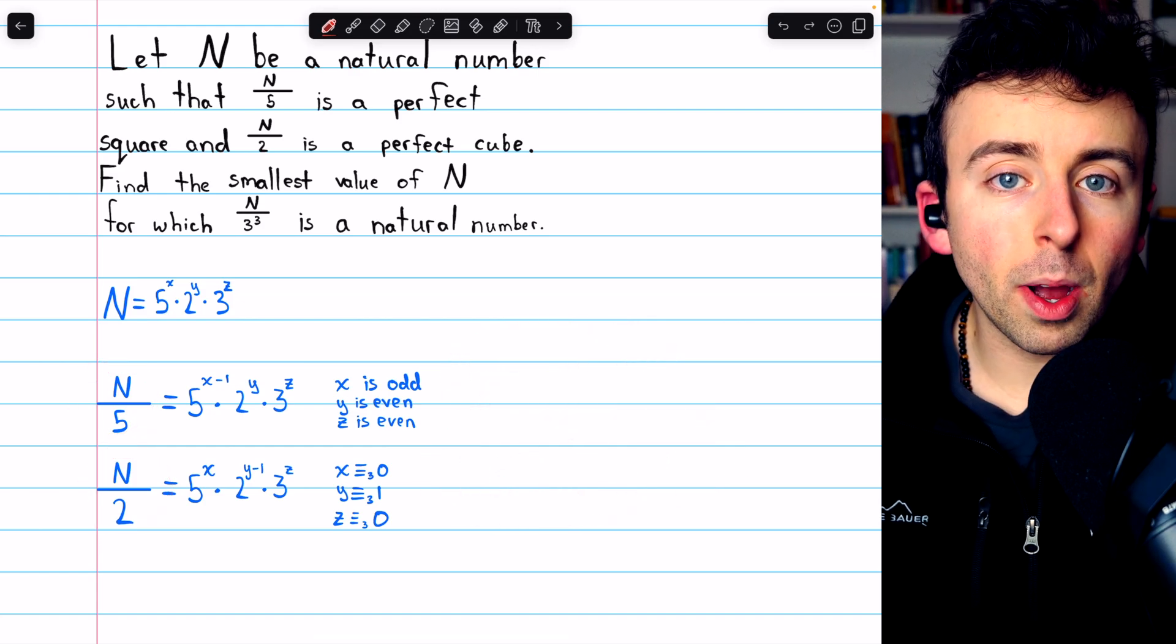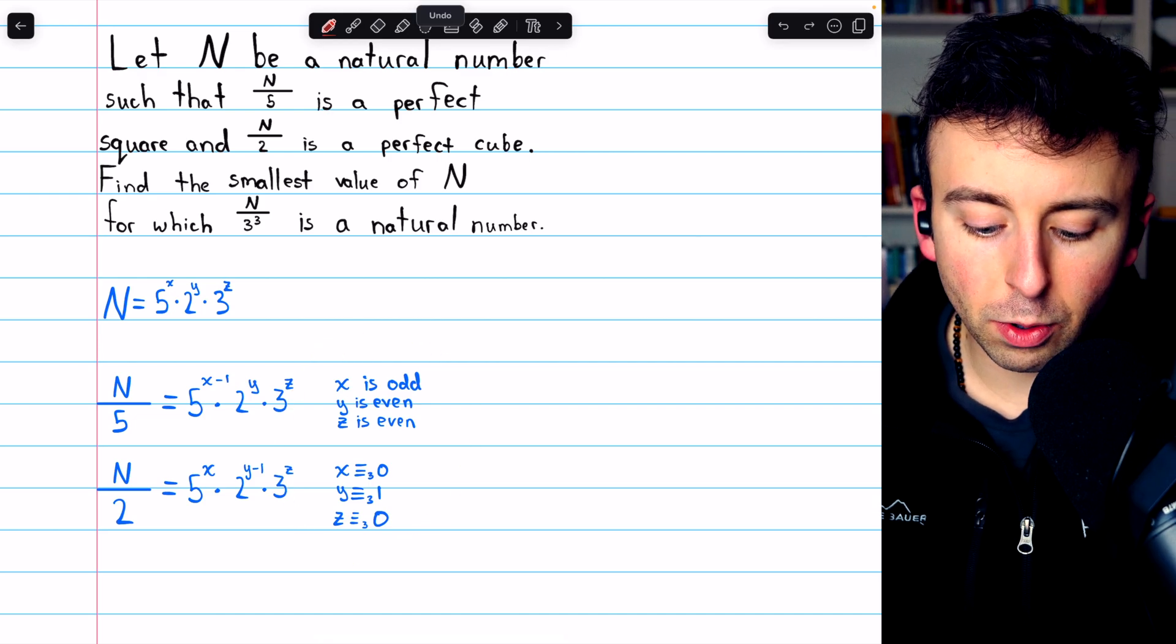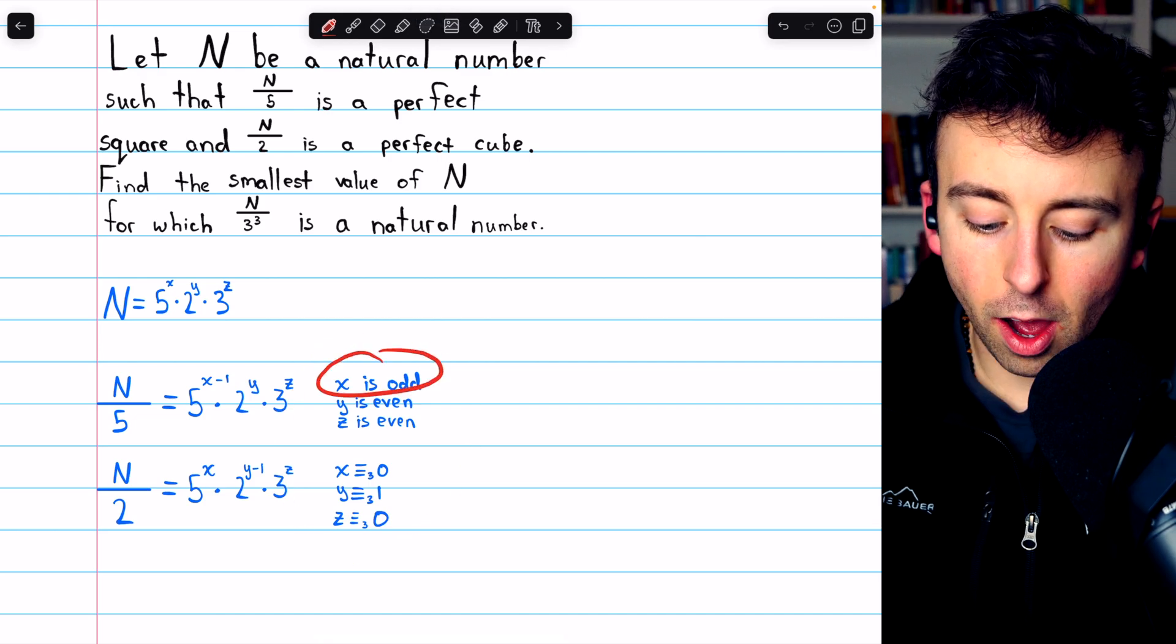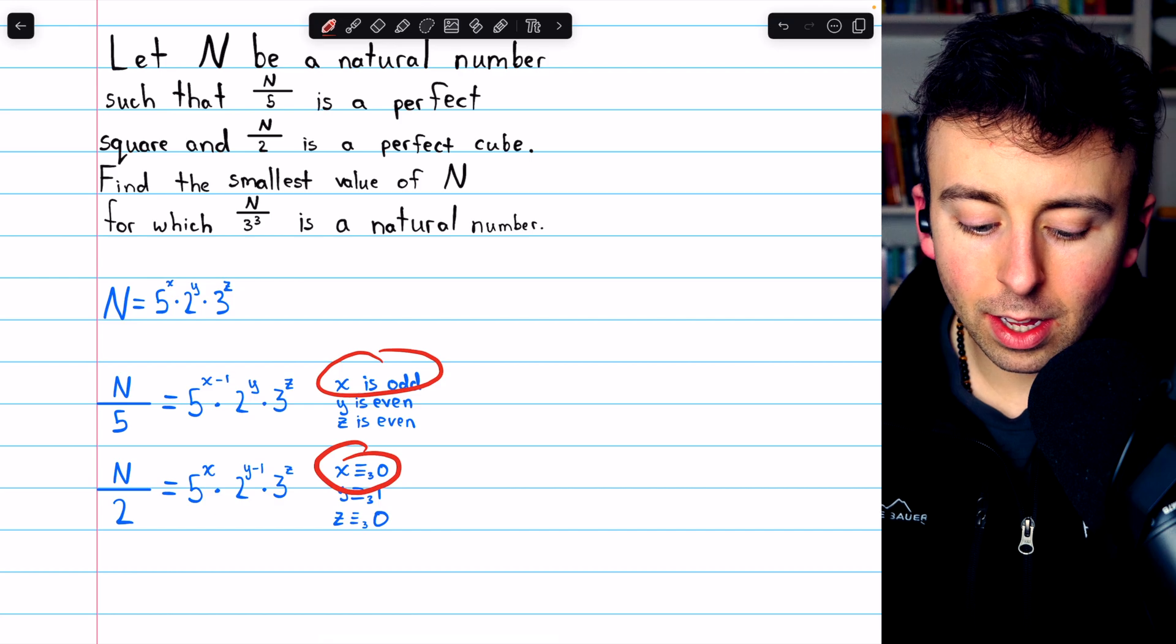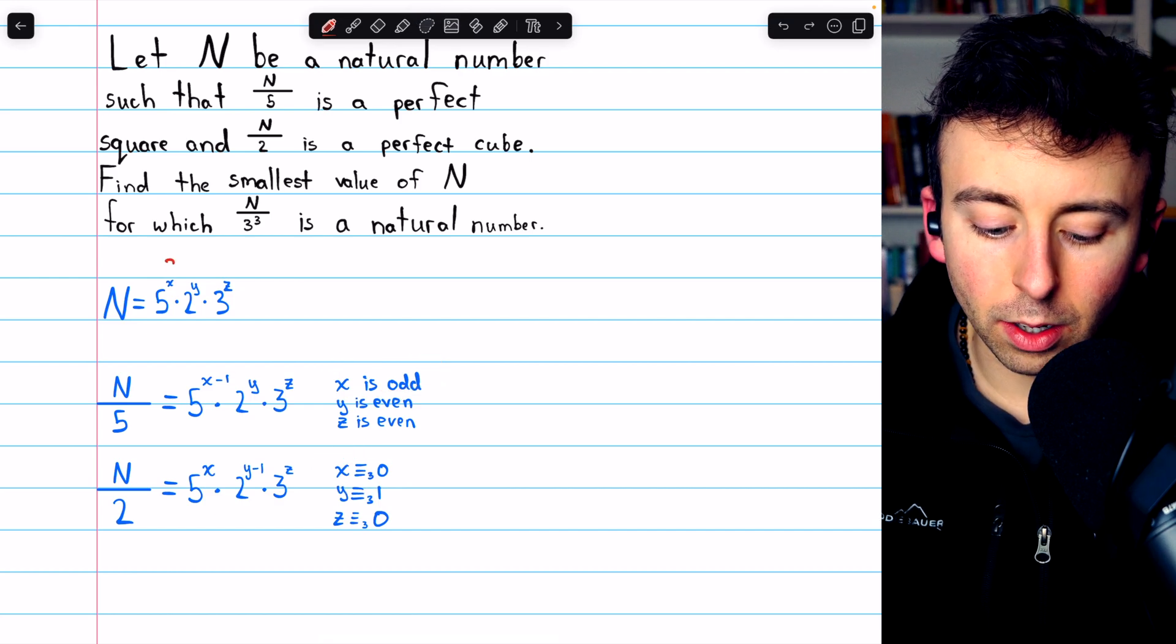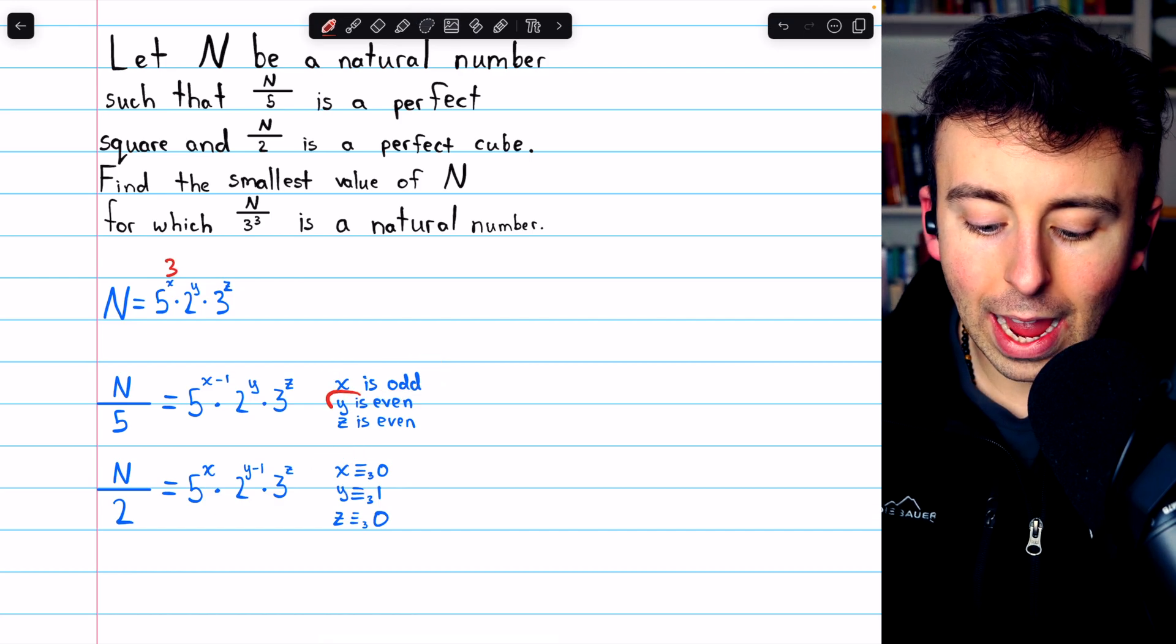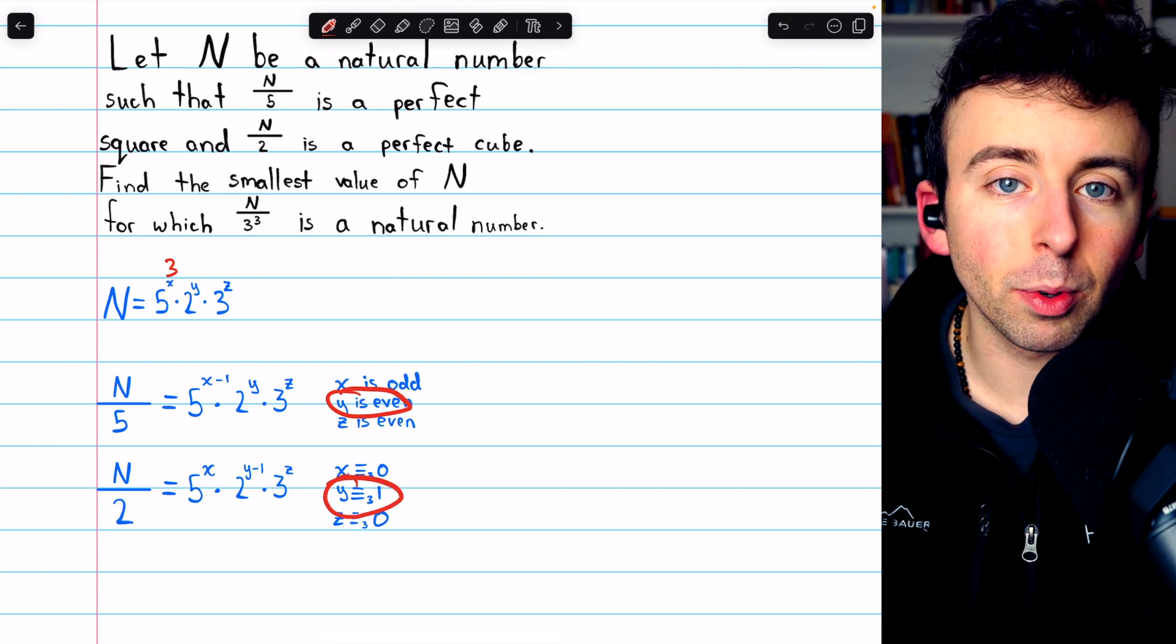Now, what's the smallest x, y, and z can be while fitting these restrictions? Well, if x has to be odd and a multiple of 3, the smallest that x could be would be 3. If y has to be even and 1 greater than a multiple of 3, then the smallest y could be is 4.